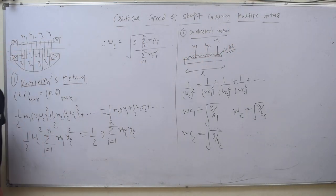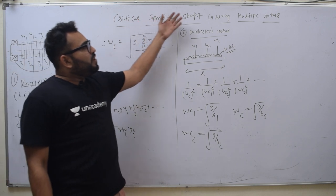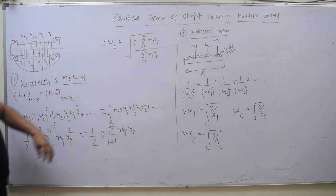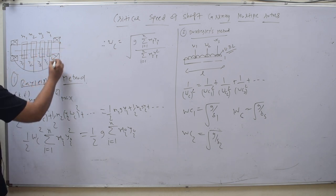Hi friends, this is Professor Karthik Trivedi. Today we will see the critical speed of shaft carrying multiple rotors. So here you are seeing a shaft. This is one shaft, this is the whole shaft. It is not the center line.